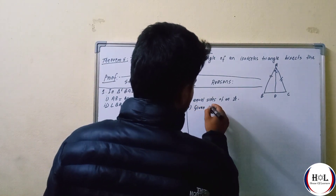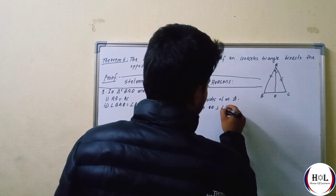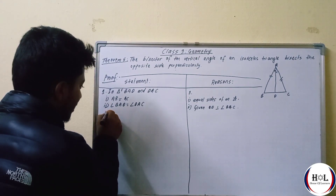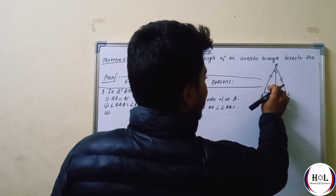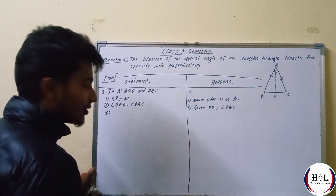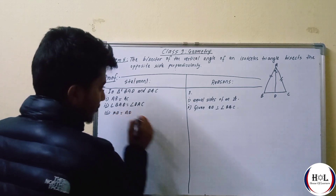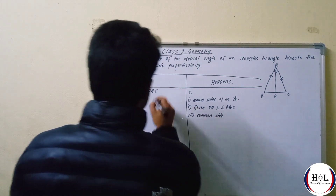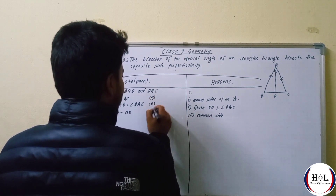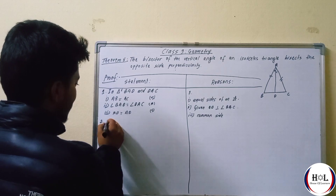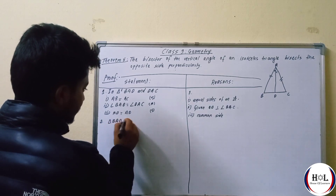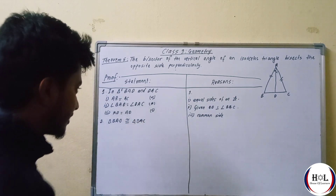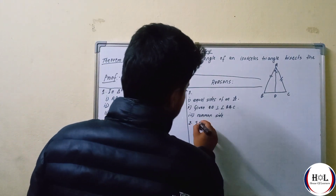Given: AD bisects angle BAC. Angle BC and the triangle side are equal. AD is the common side. By Side-Angle-Side — statement number 2 — triangle BAD is congruent to triangle DAC.